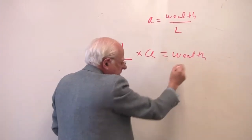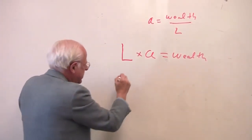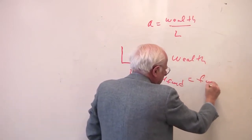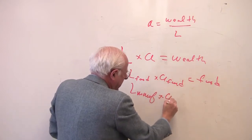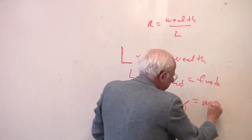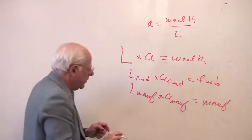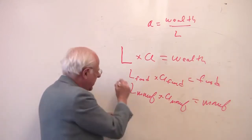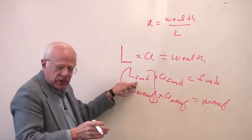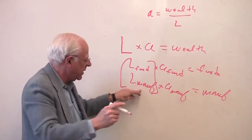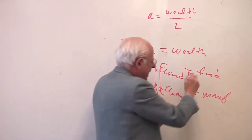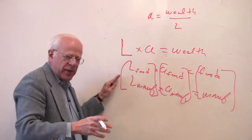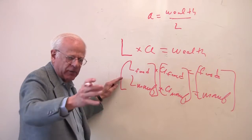You can break up this labor process into a variety of components. Labor could be producing food times the productivity in food — that gives us the food in society. Then you have labor in manufacturing times the productivity in manufacturing — that gives us the manufacturing in society. What we have here is a division of labor. I've divided L into labor producing food and labor producing manufacturing, with a productivity associated with each, giving us the various kinds of wealth: food and manufacturing.